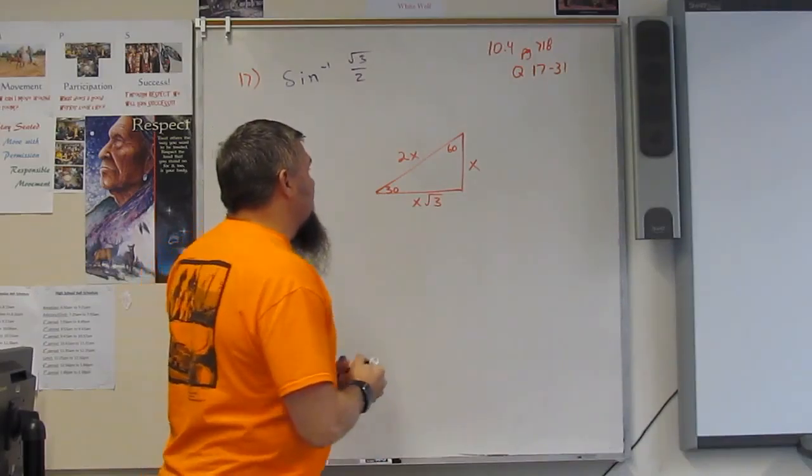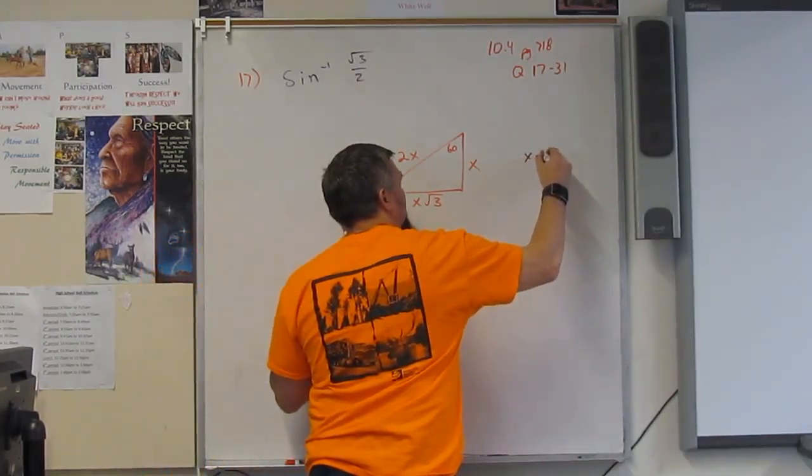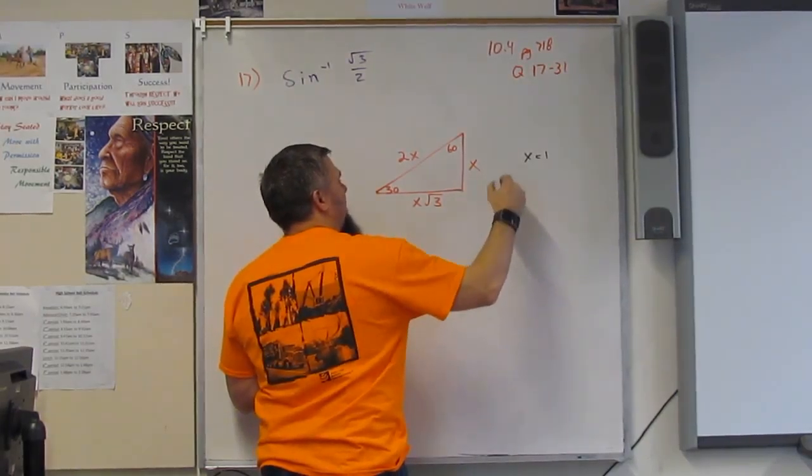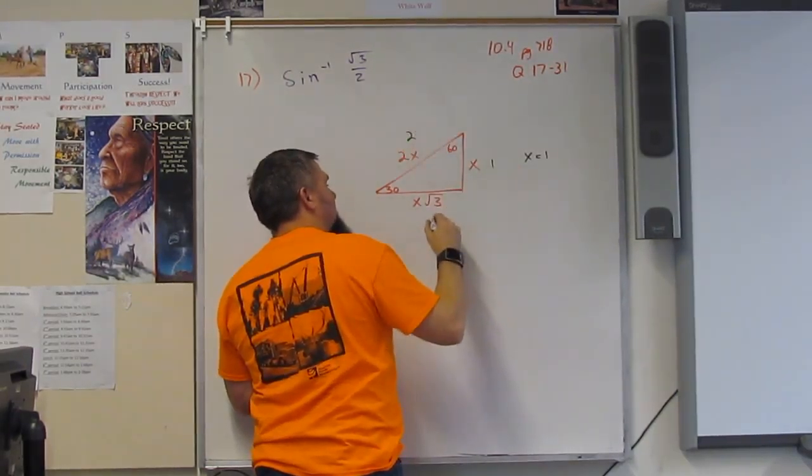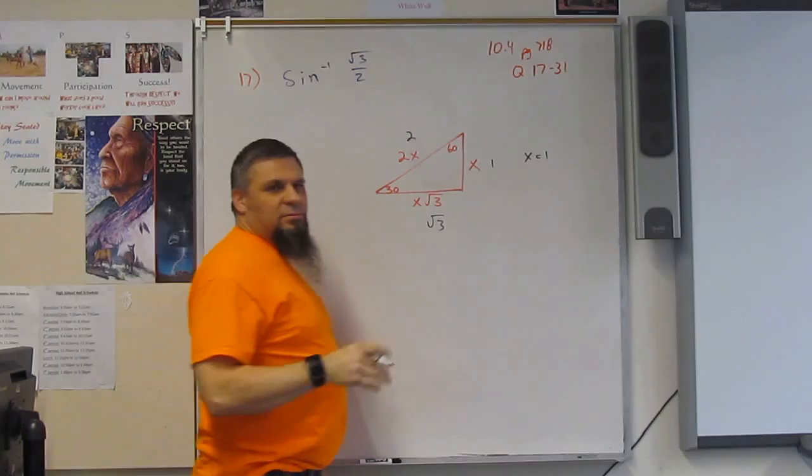If I use x equals one, then this would just be 1, 2, and square root of 3. Does that make sense?